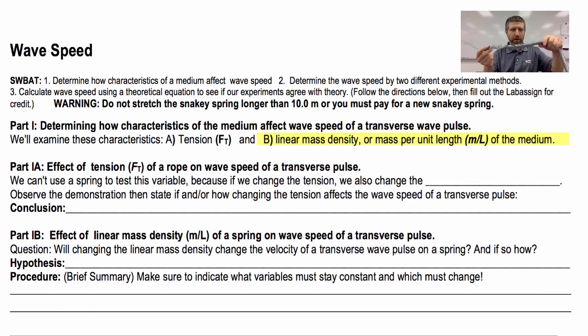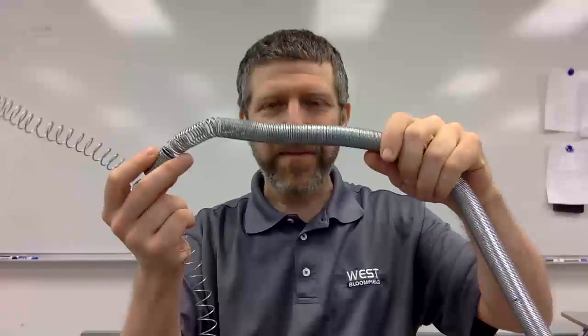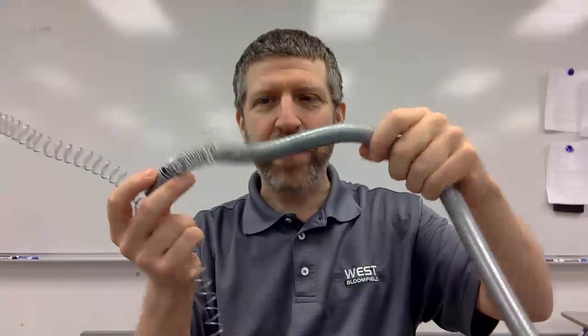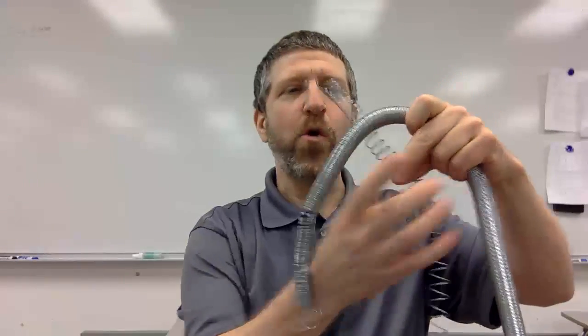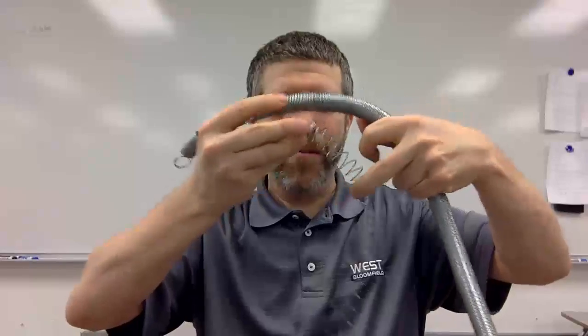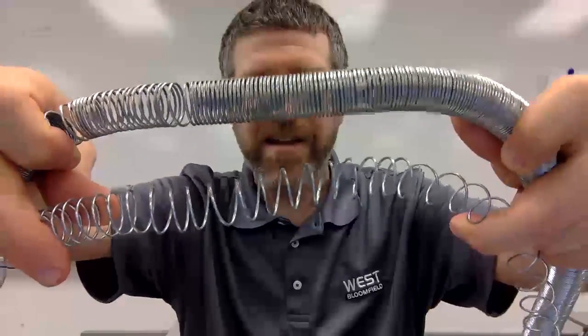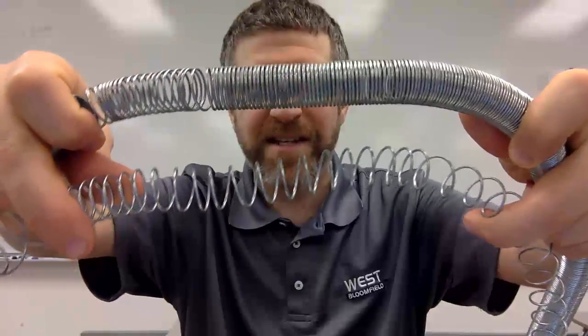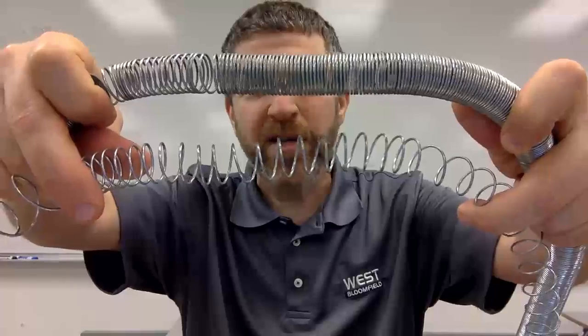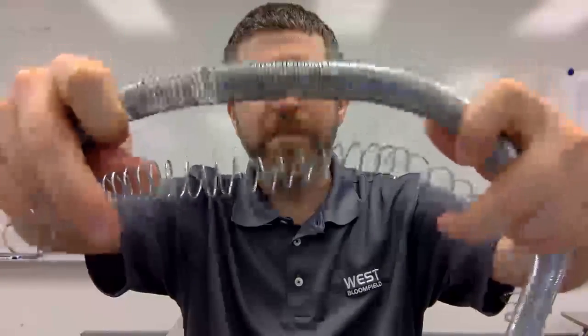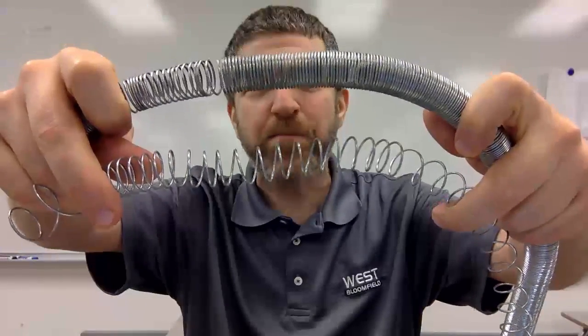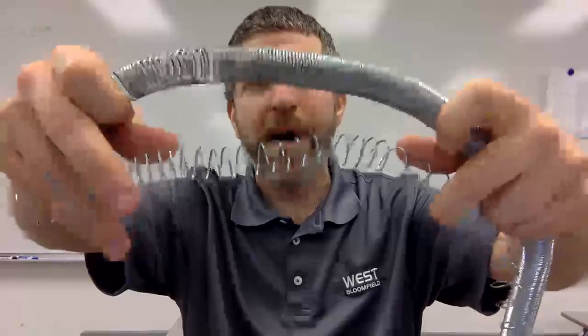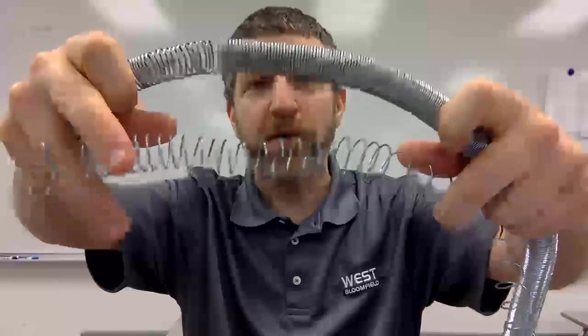Here's an example of a spring with high linear mass density. It's got a lot of mass per meter. This one has lower linear mass density. Let me bring those up to the camera so you can see. Top one, high linear mass density. Bottom one, lower linear mass density. The one on top weighs more, has more mass per meter than the one on the bottom, which has lower mass per meter of length.